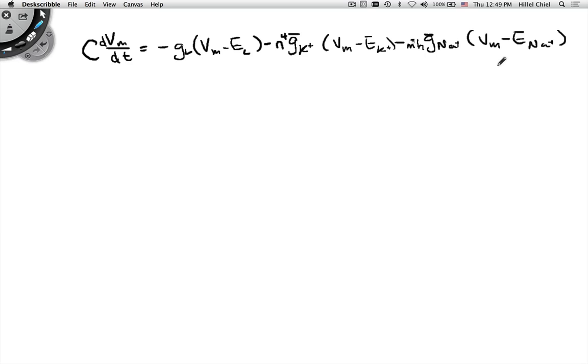Moving on from here to really, really understand this, what we need to understand is how n changes and how m changes and how h change. With what? Well, they all change with time. And they're activated by different voltages. And fortunately, with the voltage clamp, you actually have measurements of those things. So now what do you do? Well, they're all functions of voltage and time. So now we need to figure out what these snazzy functions are.